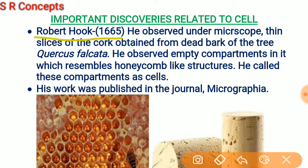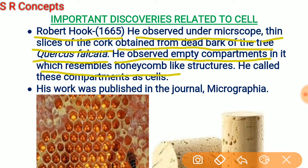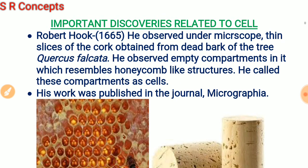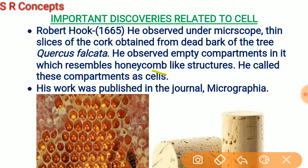In 1665, Robert Hooke observed under a microscope thin slices of cork obtained from the dead bark of a tree known as Quercus falcata. On observing under the microscope, he saw empty compartments which resembled honeycomb-like structures, and he called these empty compartments cells. These findings were published in the journal known as Micrographia.